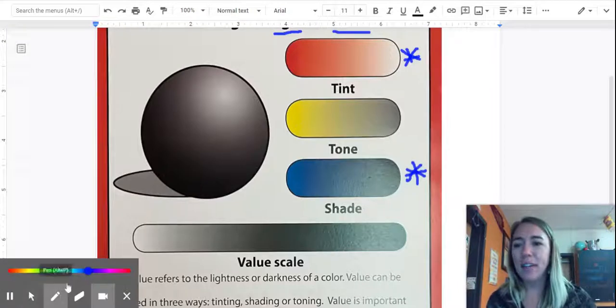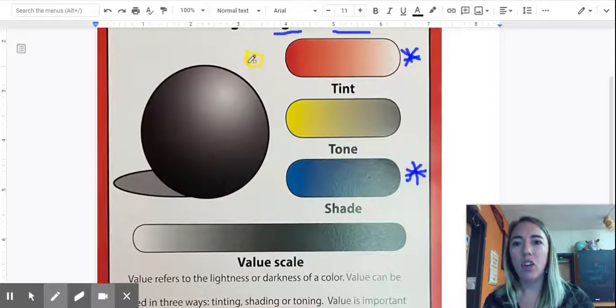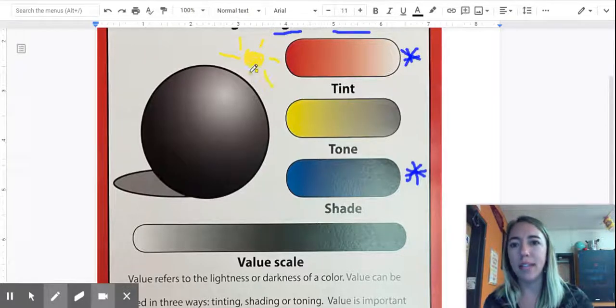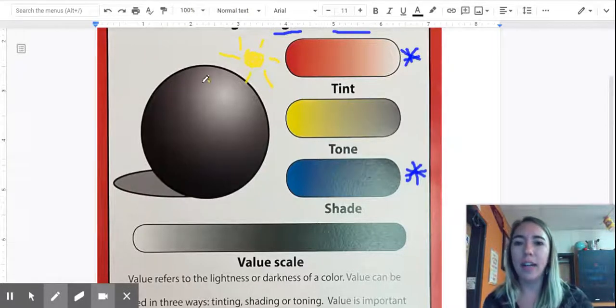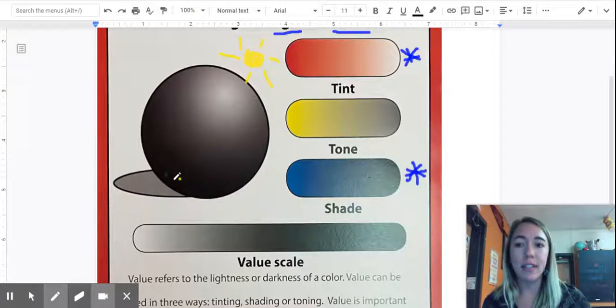So if you were looking at this sphere right here, it is drawn with values to show the lightness and darkness. It's like I have a sun and the sun is giving light and it's shining right here. That's because it's really light in value. And then this part that is away from the sun is really dark in value.